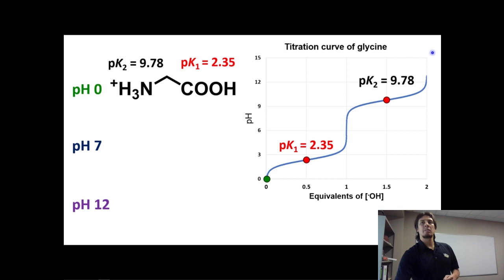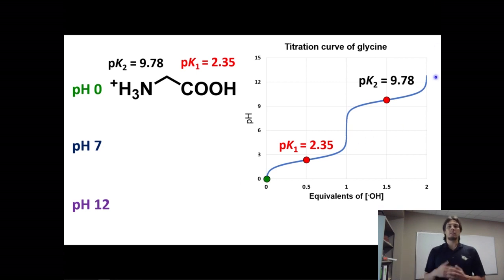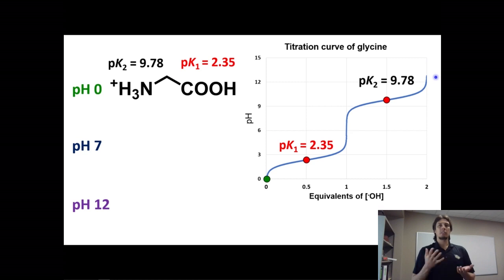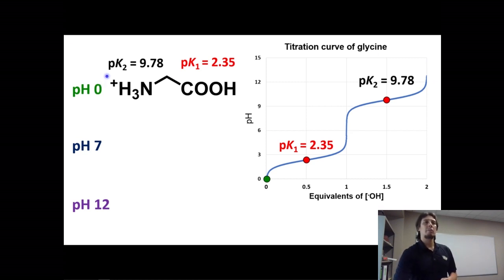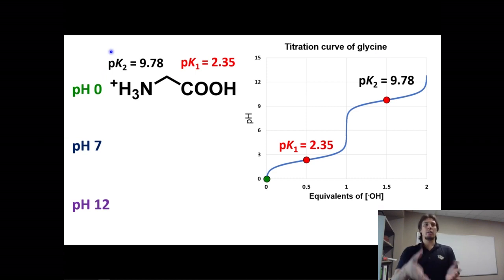How do we find the isoelectric point? We need to know what the titration curve looks like, and for that we need to know the pKa values so we can draw a titration curve for glycine. There are two ionizable groups: the amine group and the carboxylic acid.